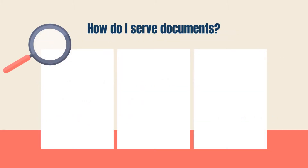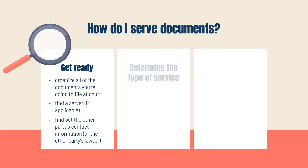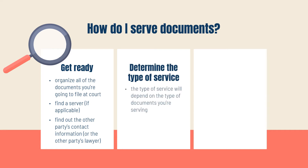Let's talk about the process for serving documents. The first step is to arrange to get copies of all the documents you're filing at court to give to the other party, or to the lawyer that is representing them, if they have one. To do this, you may also have to find someone else to serve the documents, and you'll need to find out all the contact information for the other party or their lawyer. There are several types of service, and you'll need to determine which type you should use. Depending on what kind of court documents you have, you might have to get someone else to serve the documents.